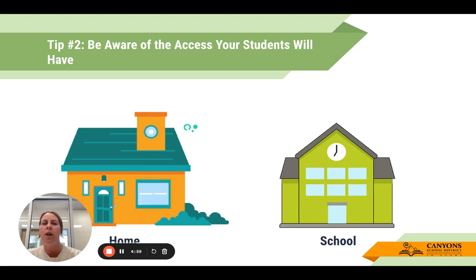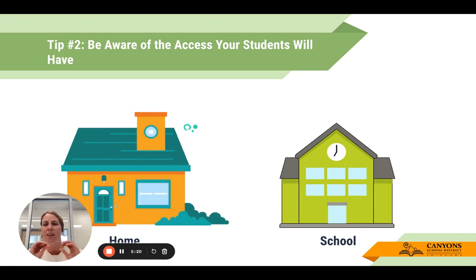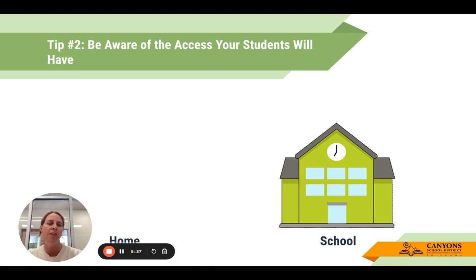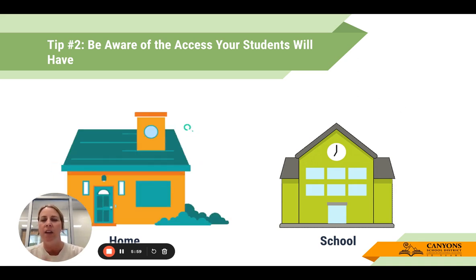Tip number two, and I think this is a really important one, is just being aware of the access your students will have, because what students have access to at home versus school is different. You can't always guarantee students will have access to Wi-Fi, or if they do, that it's a strong enough bandwidth for all the activities you're asking. They may not even have access to devices. You also want to think about offline resources — even if students are doing activities offline, do they have access to the materials like paper, pencils, books, or science experiment supplies? Do you have alternatives in case access is limited?